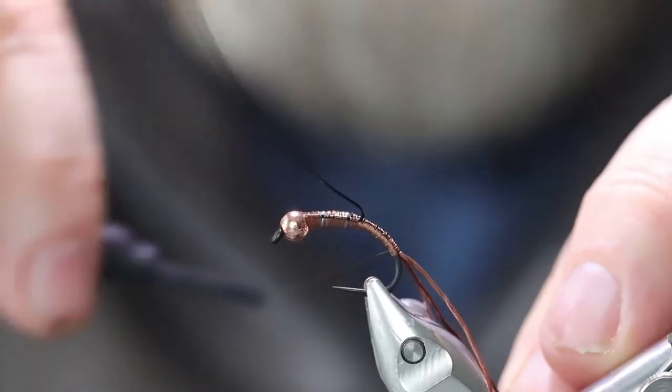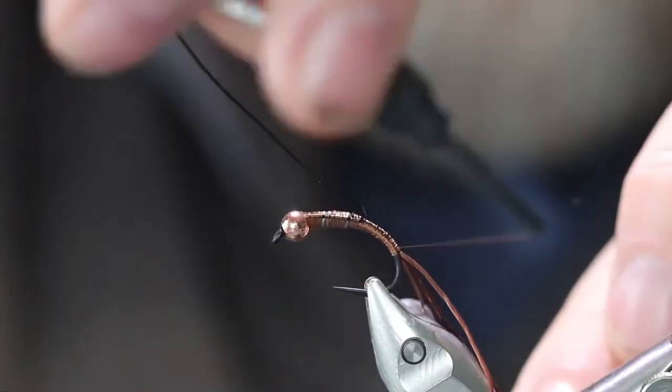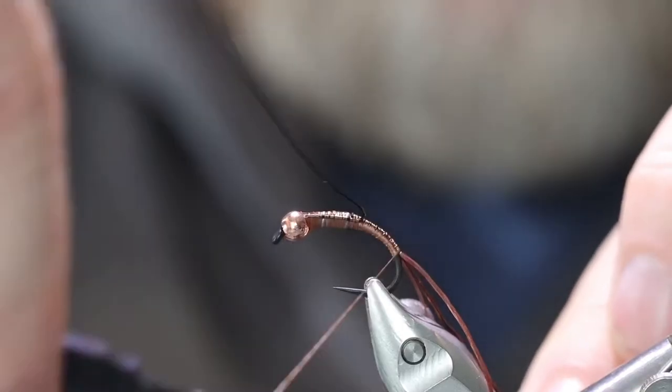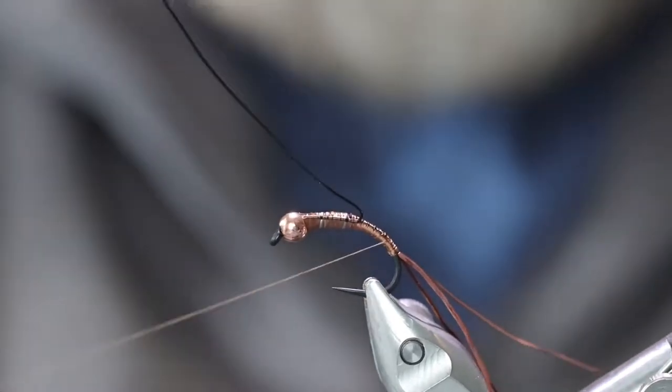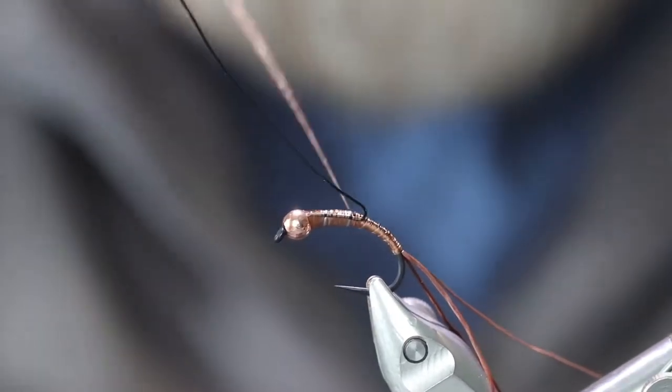I'm going to tie this side, the brown side, all the way down to the tail. We'll get that done first. Bring our thread back up to the black wire.